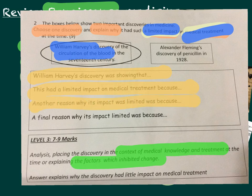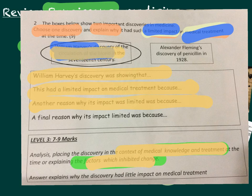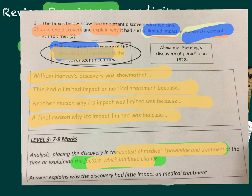For your second paragraph, talk about either factors that stopped change or the context of medical knowledge and treatment at the time. A second reason Harvey's discovery had limited impact was conservative ideas — people didn't accept new ideas quickly. Challenging Galen and Hippocrates was very new, and even someone like Vesalius didn't initially want to publish findings showing Galen was wrong. Then add a third and final paragraph about further factors that inhibited progress — for instance, even though the printing press could communicate ideas more quickly, it was still expensive and slow, and not everyone had access to published information.